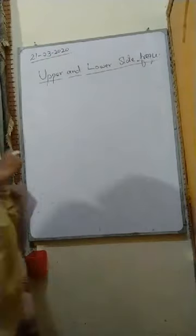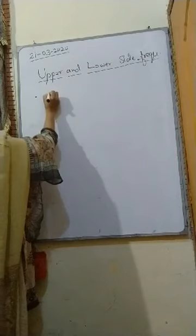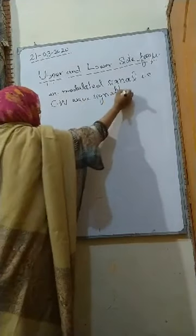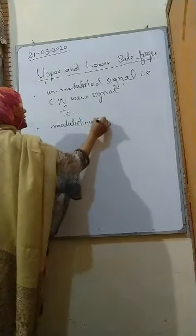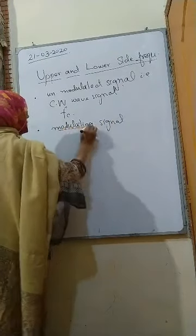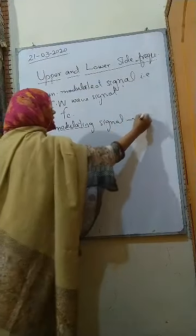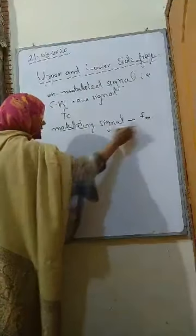Assalamu alaikum. Today we will study upper and lower side frequency. In upper and lower side you can see the signal in the modulated and unmodulated signal. The unmodulated signal is the carrier wave signal having the frequency fc, whereas the modulating signal — meaning voice, video, or audio signal which we want to transfer from one place to another — has the frequency fm. So when fc is combined with the modulating signal, the heterodyne action takes place.